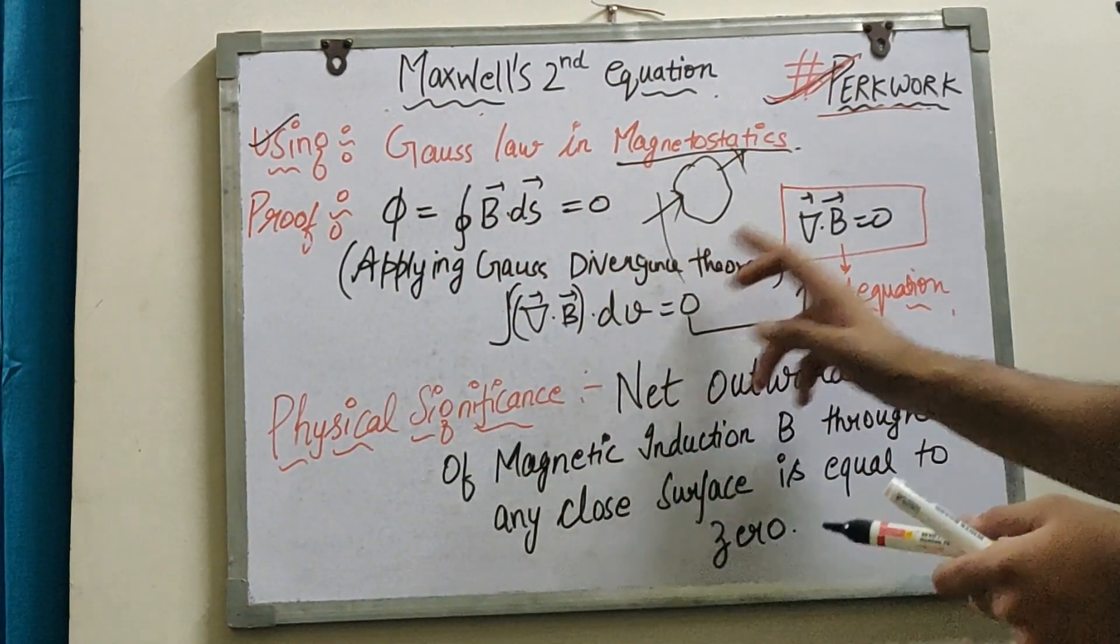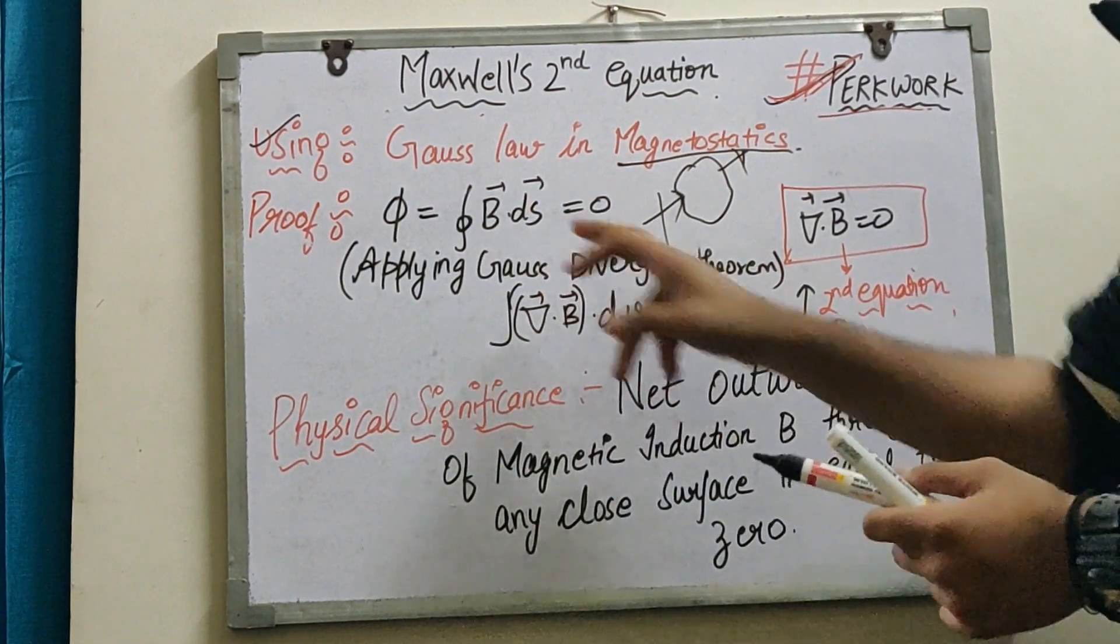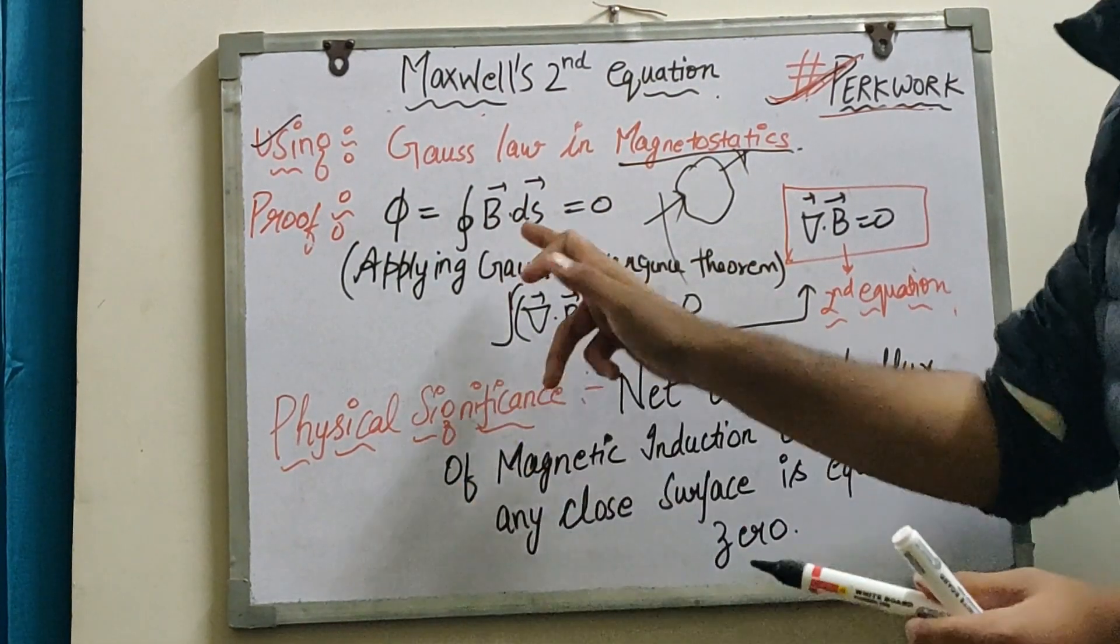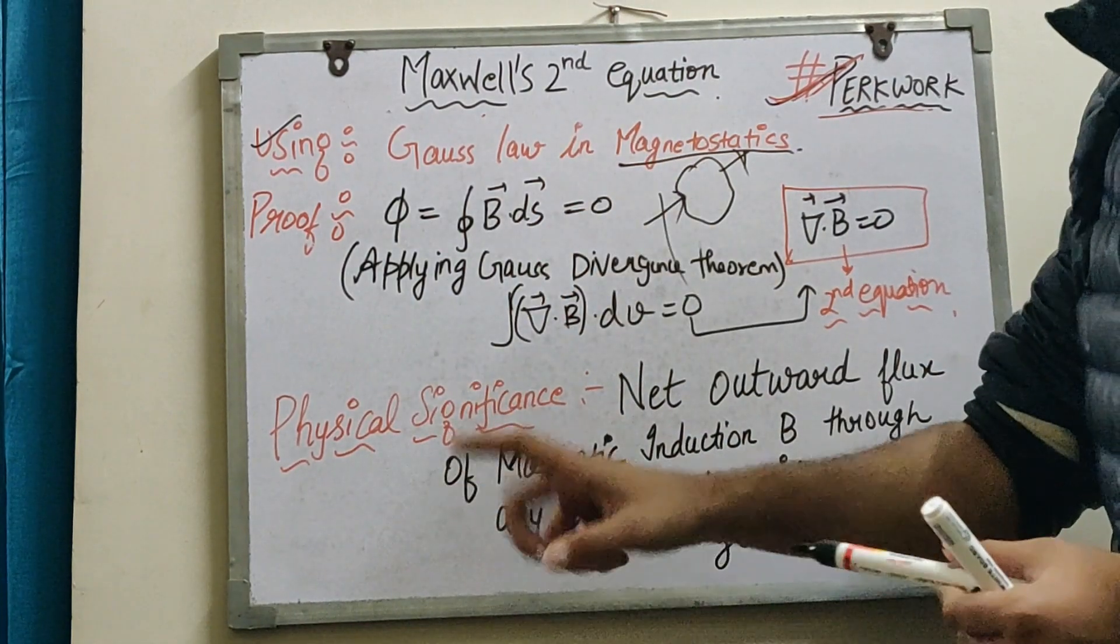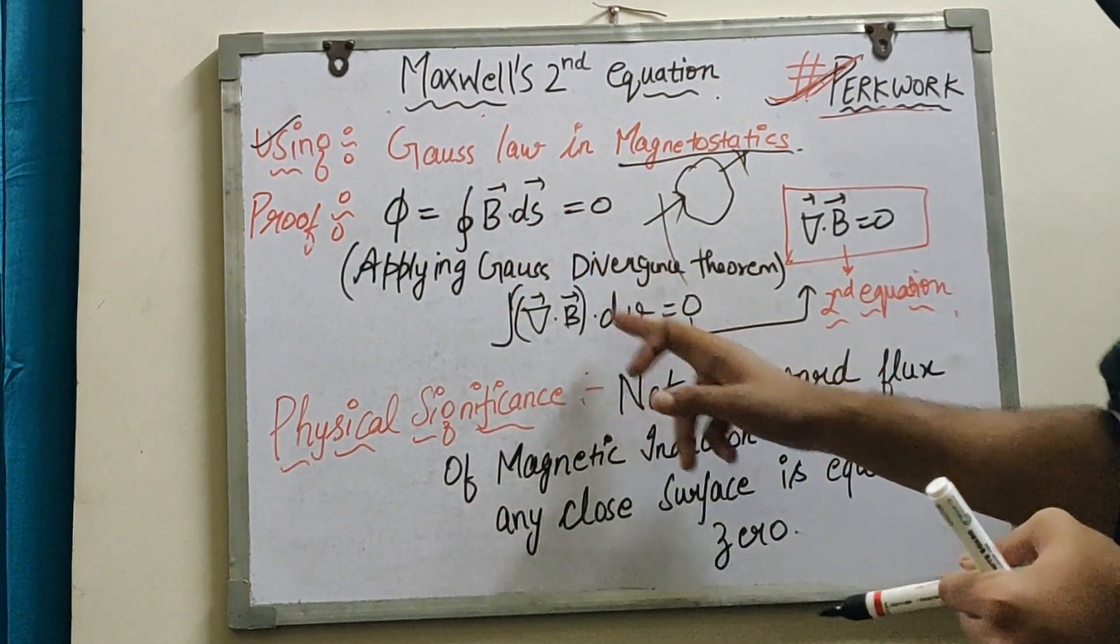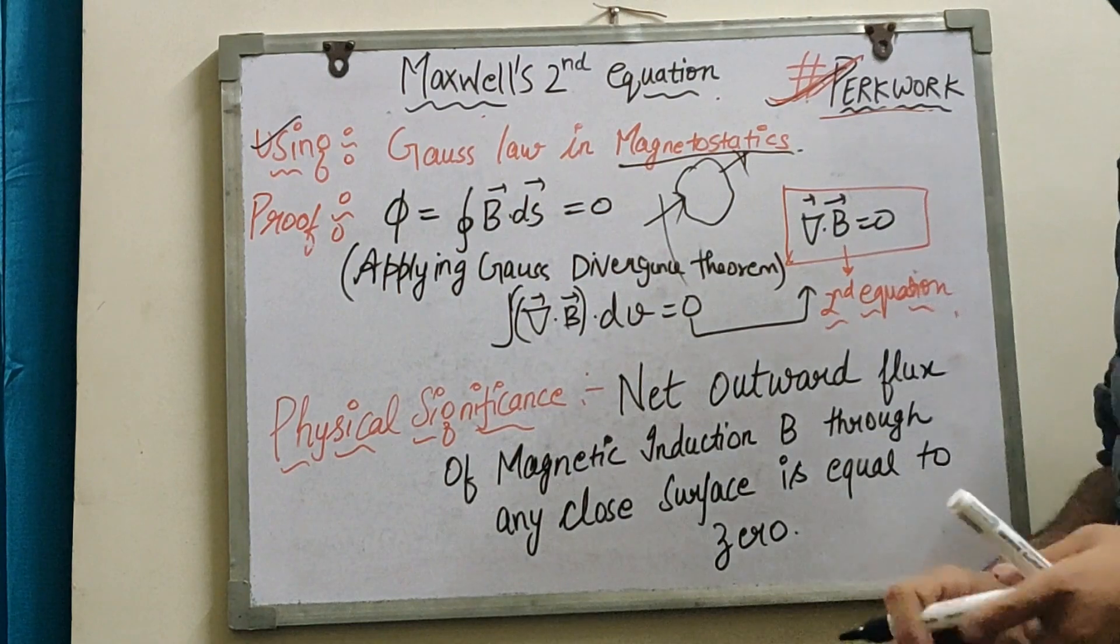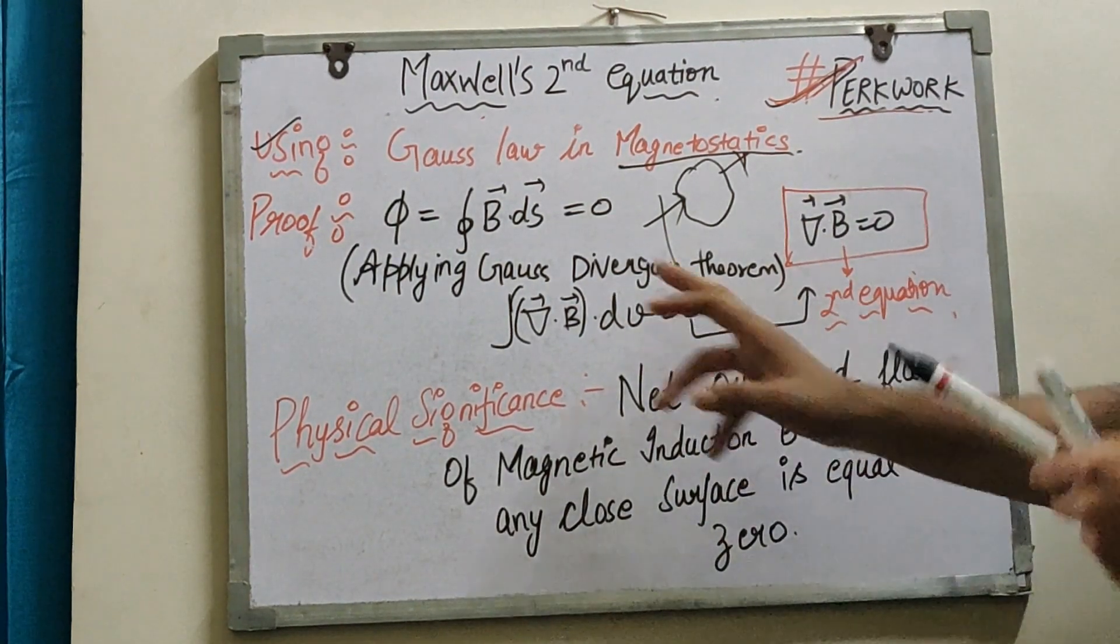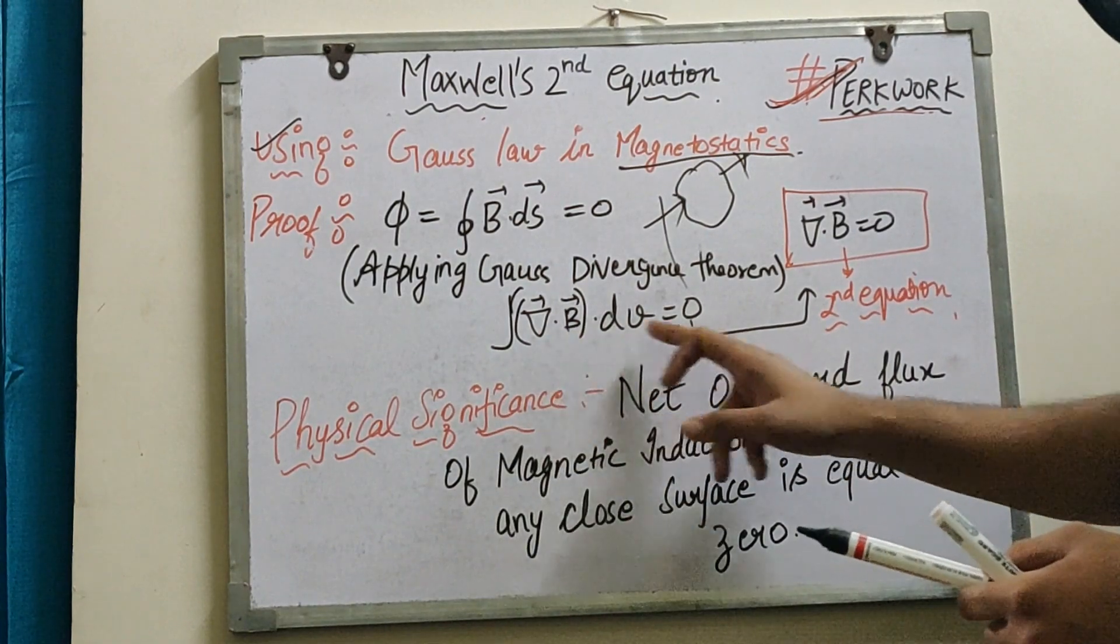We know that when we apply Gauss's divergence theorem to ∮B·ds, this surface integral becomes a volume integral. When it changes to the volume integral, this B vector becomes ∫del·B dv.